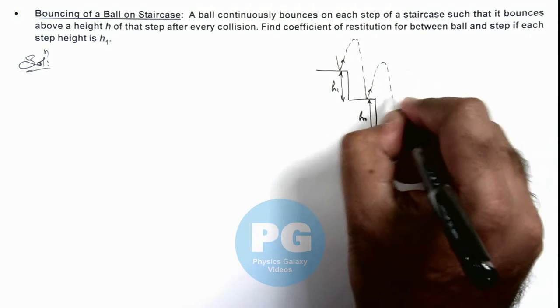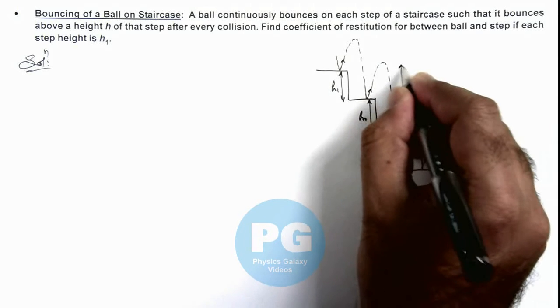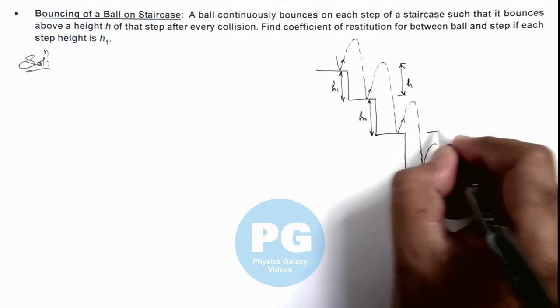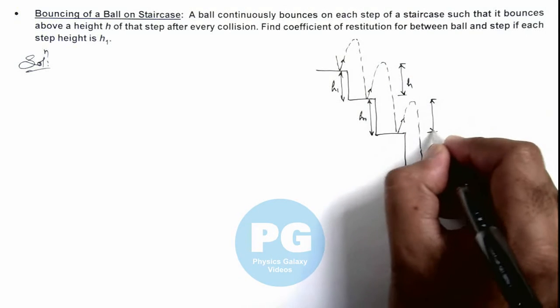We are given that it bounces to a height h after every collision. Then it falls to a height h plus h₁ and then again bounces to a height h.